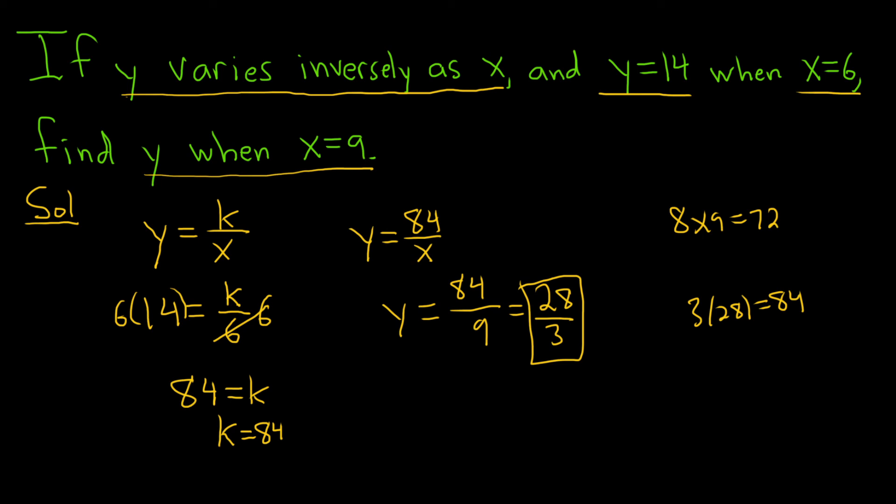So again, you just do it in steps. So y varies inversely as x. So you write that down. And then y is 14 when x is 6. So you use this information to find k, and then you plug it back in. And the last step is usually the easiest step. You just plug it in. I feel like the simplification here was a little bit harder than in some of the other examples.